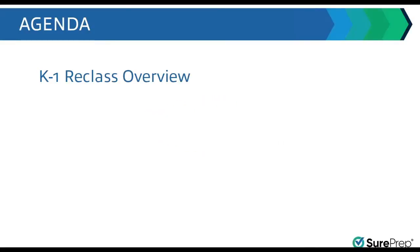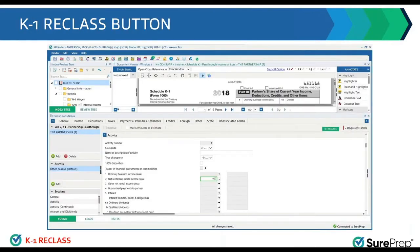I'm going to show this amazing tool that allows you to take information that is in many places on a K1 and organize it so that it all flows to the right location in your tax return. When in the SP Binder — and this is the SP Binder program as it looks today — you can get to the K1 reclass button in different ways.